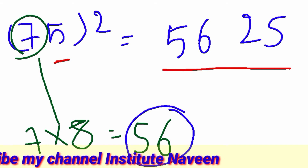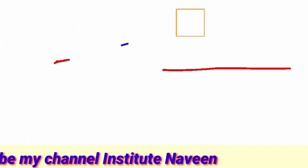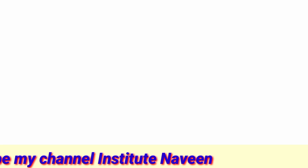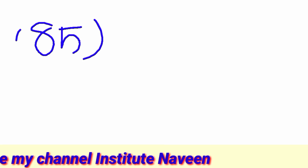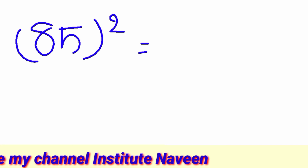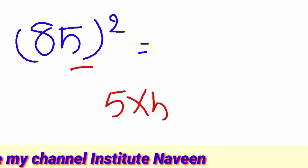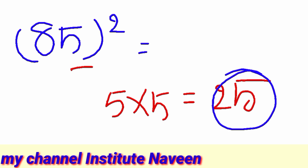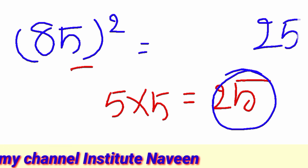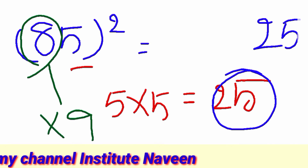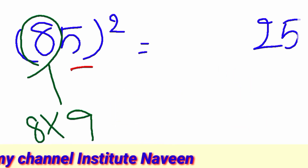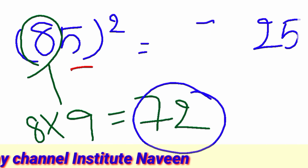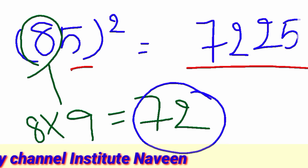Next, last one. 85 squared. Here we go. This is sum 5 x 5. We are going to choose sum. Next, 8 plus immediate number is 9. 8 nines are 72. 72 is equal to 7,225.